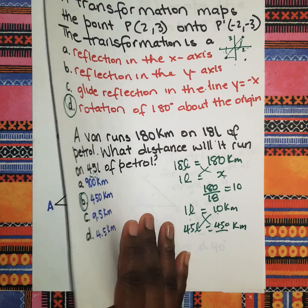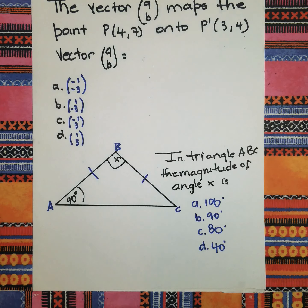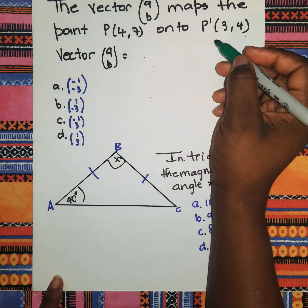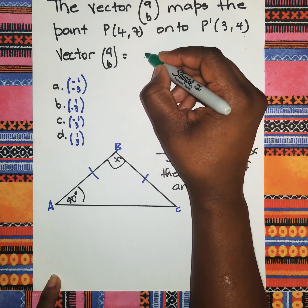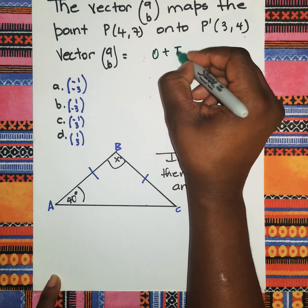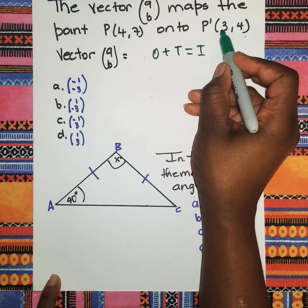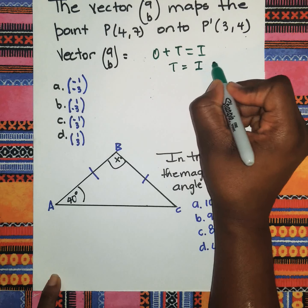The vector AB maps the point P(4,7) onto P'(3,4). We are asked to state the vector AB. To get the vector AB from here, we know that object plus translation equals image. We know the object is P and the image is P', so to get the translation vector you're going to say image minus the object.